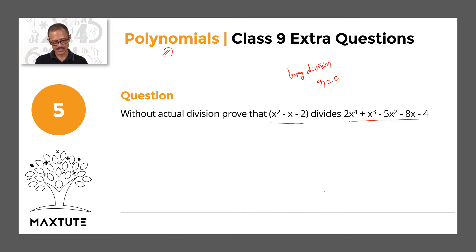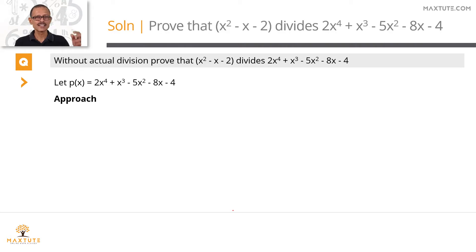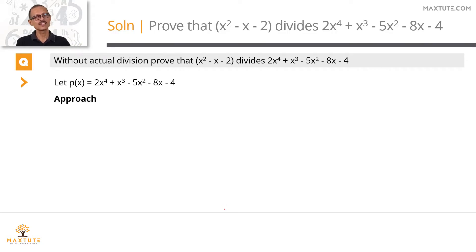Let's say the given polynomial is equal to p of x. So p of x equals 2x to the power 4 plus x cubed minus 5x squared minus 8x minus 4. It's a four-step process to get to the answer. I'll discuss steps 1 and 2 now, and we'll look at steps 3 and 4 subsequently.